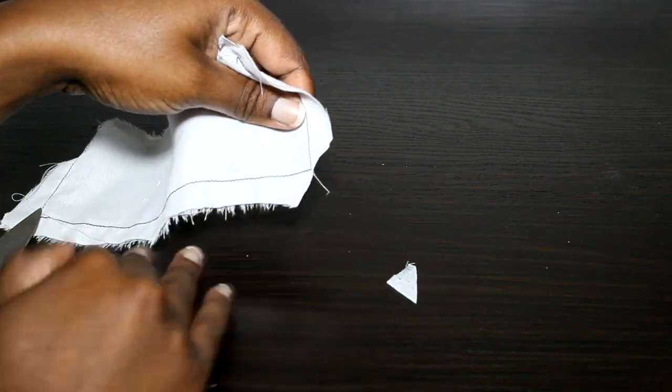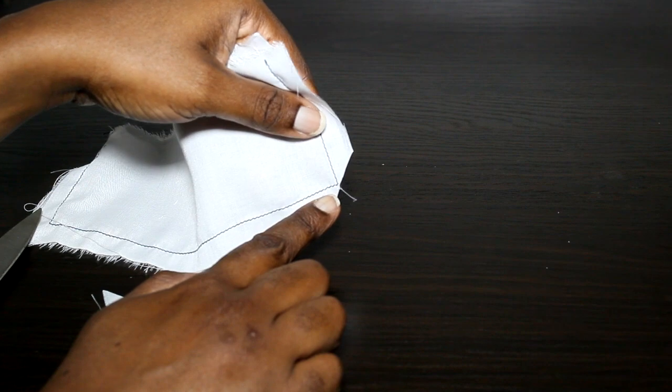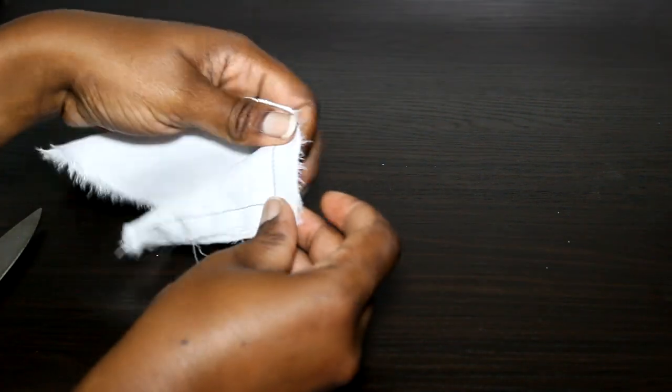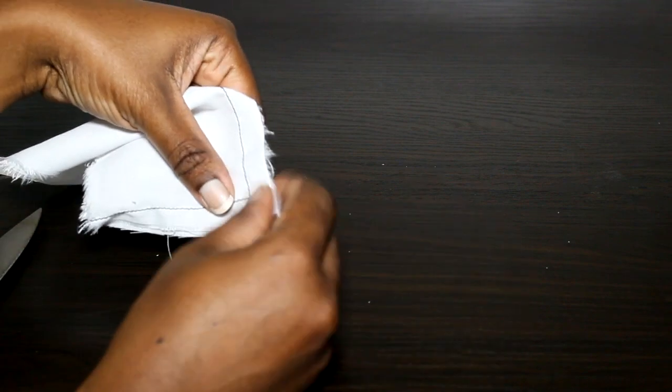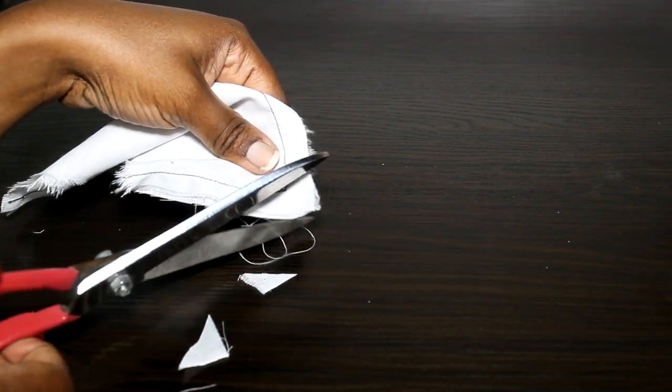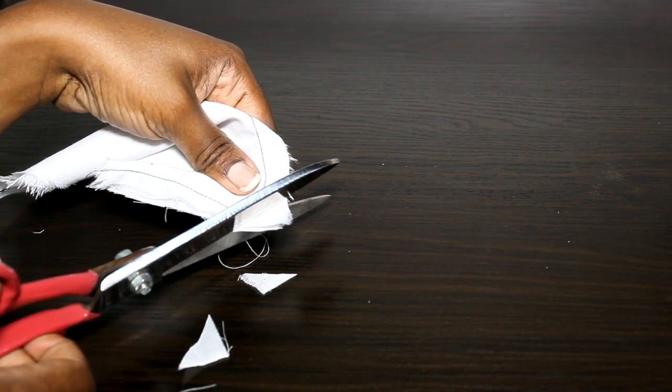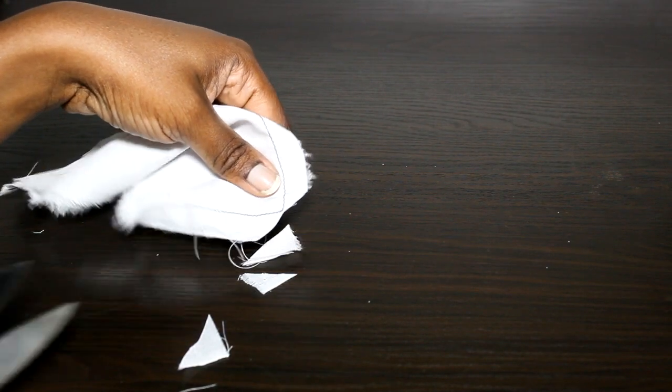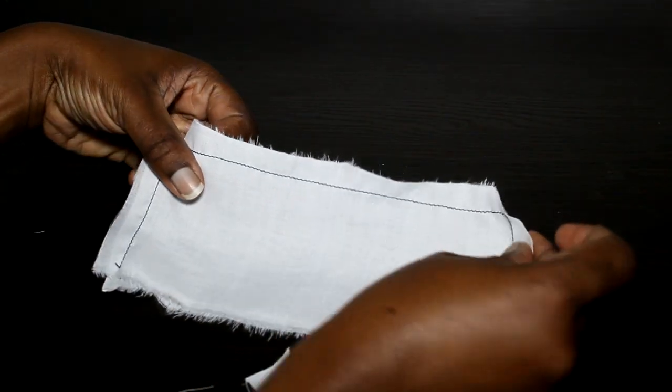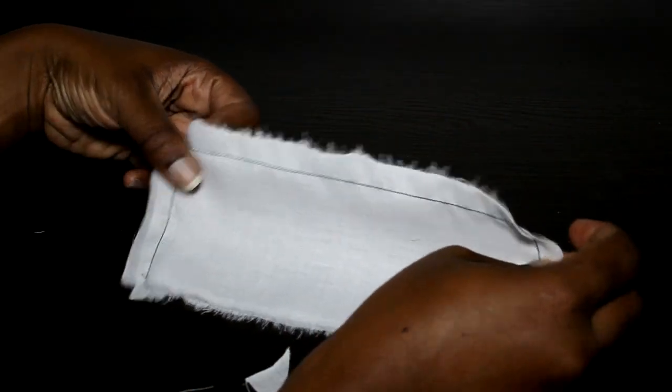You see I go across the corner but I don't go close into the stitching line. So I'm going to do that for this corner. I'm going to do that for this corner too. So that's my two corners clipped down.